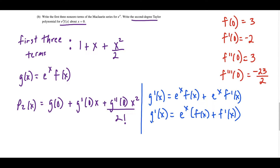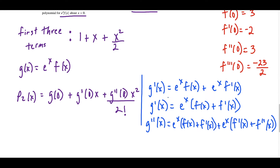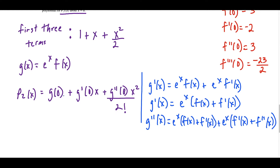Taking the second derivative: g double prime(x) equals e^x times (f(x) + f prime(x)) plus e^x times (f prime(x) + f double prime(x)). Now I need to evaluate g(0), g prime(0), and g double prime(0) by plugging in x equals 0 one by one.